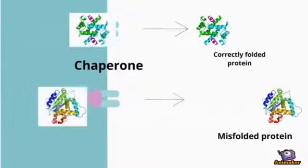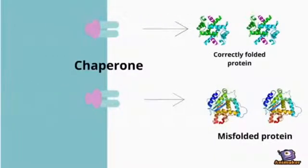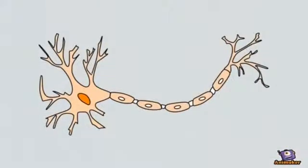Cells halt protein production if there are too many misfolded proteins. While this system is protective, it stalls the manufacture of vital proteins, which eventually kills neurons.